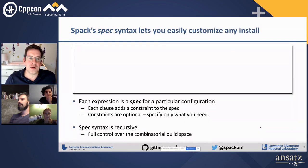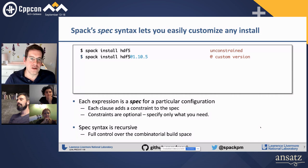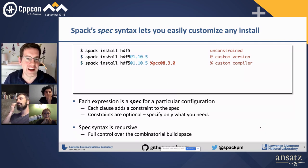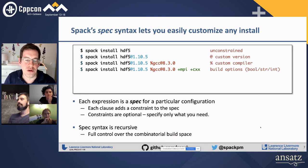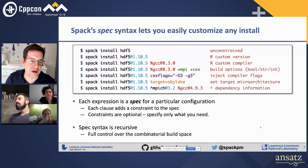What's different about Spack from other package managers is it's very customizable on the command line. You can say 'spack install HDF5' to get any version, specify a particular version, build with GCC 8.3.0 or GCC 9, set build options, inject flags, and specify target microarchitectures like Skylake or Cascade Lake using human-understandable names. All of that customization applies down to the dependencies too.